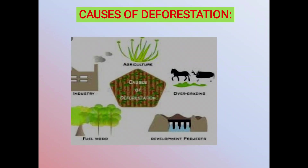The current deforestation rate in tropics is estimated to be more than 10 million hectares per year. If this rate of deforestation continues, it is estimated that the remaining tropical rainforest may disappear within a century. Forests, apart from maintaining ecological balance, play a key role in the terrestrial carbon cycle. Rapid rate of deforestation is posing dangers for avalanches, landslides, floods, droughts, and soil erosion.